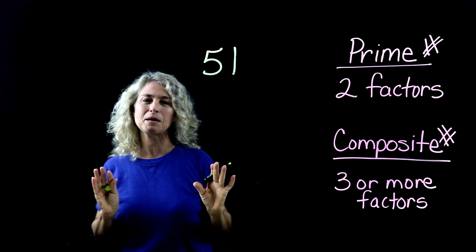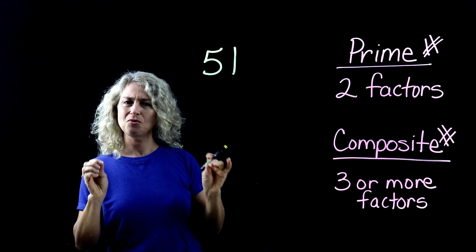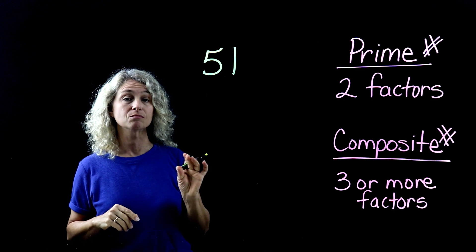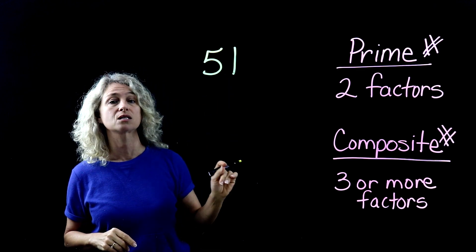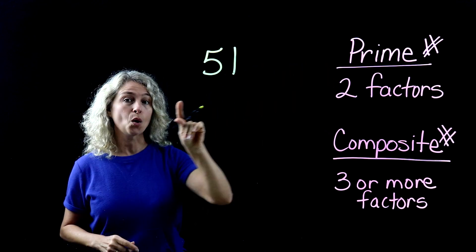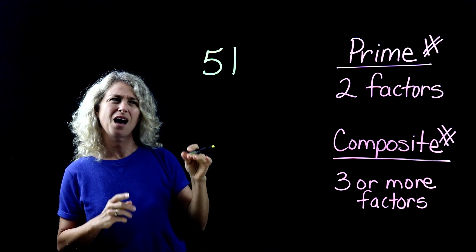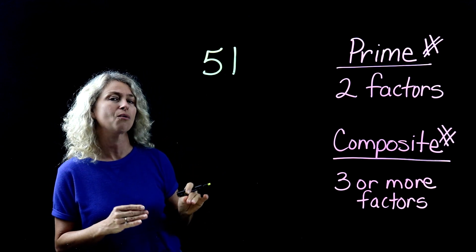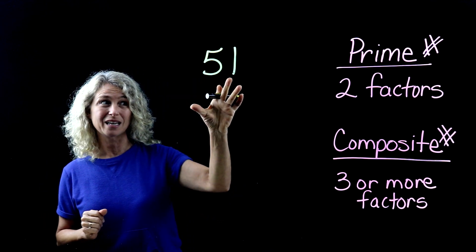Let me show you what I mean. So let's look at the number 51. Most of you are probably thinking, well, I don't know of any factor that I could multiply to get to 51. So it looks to me that this would be a prime number. But in this case, you just can't look at a number and say that looks like a prime number, or it looks like a composite number.